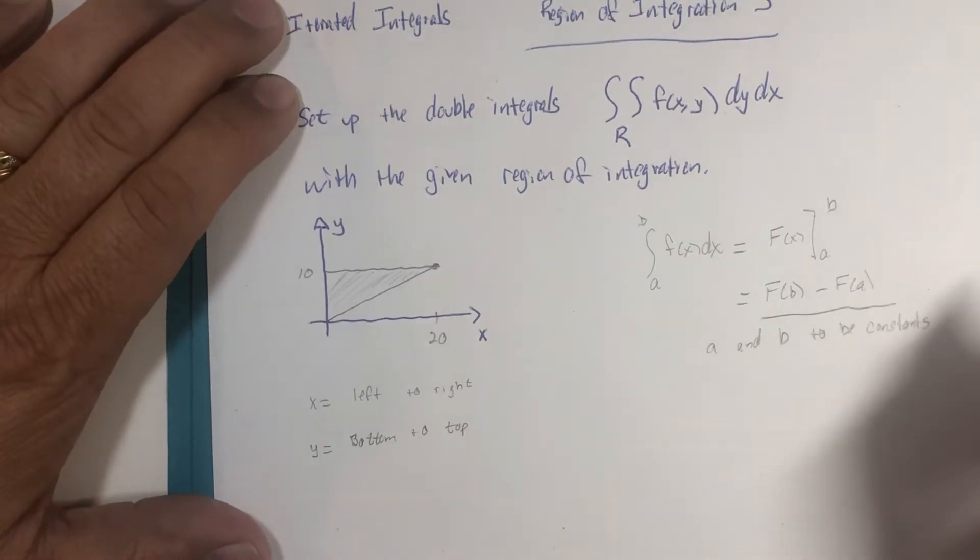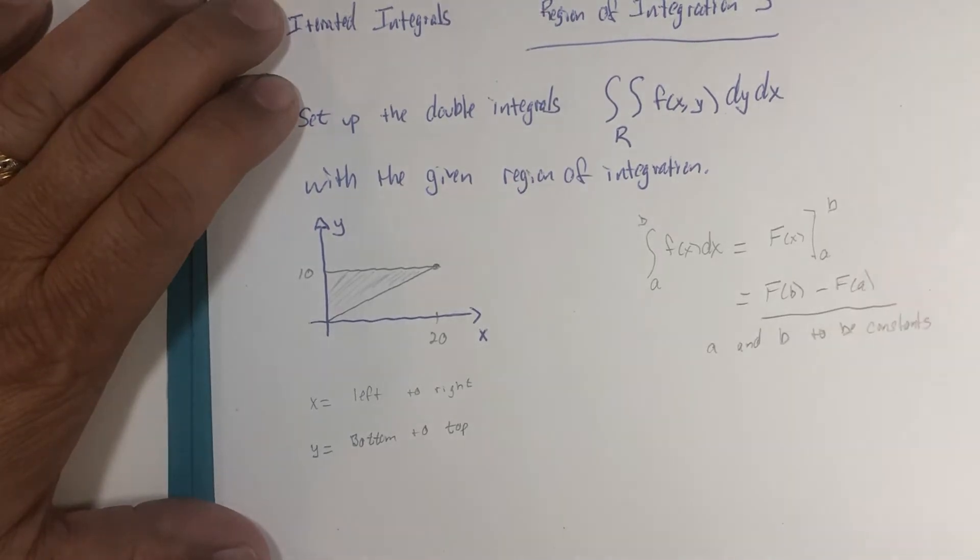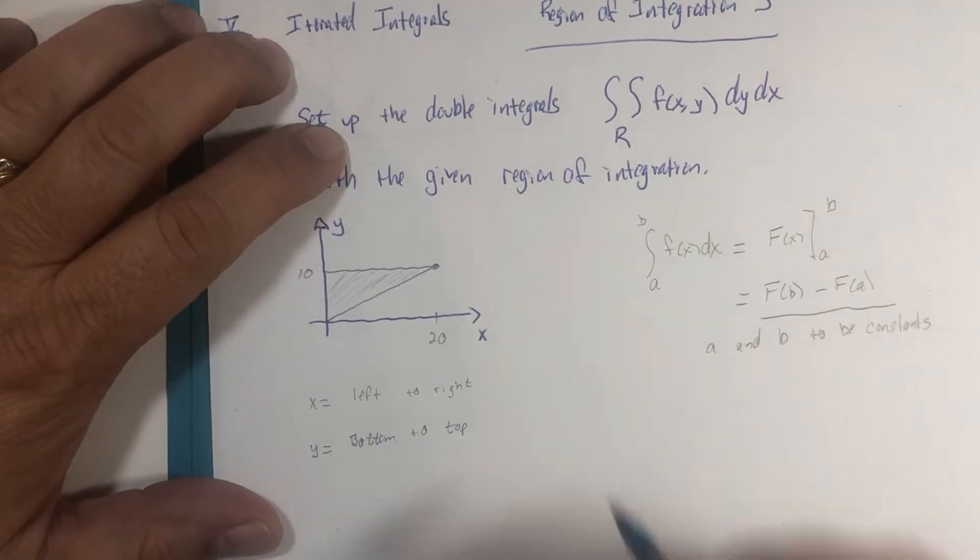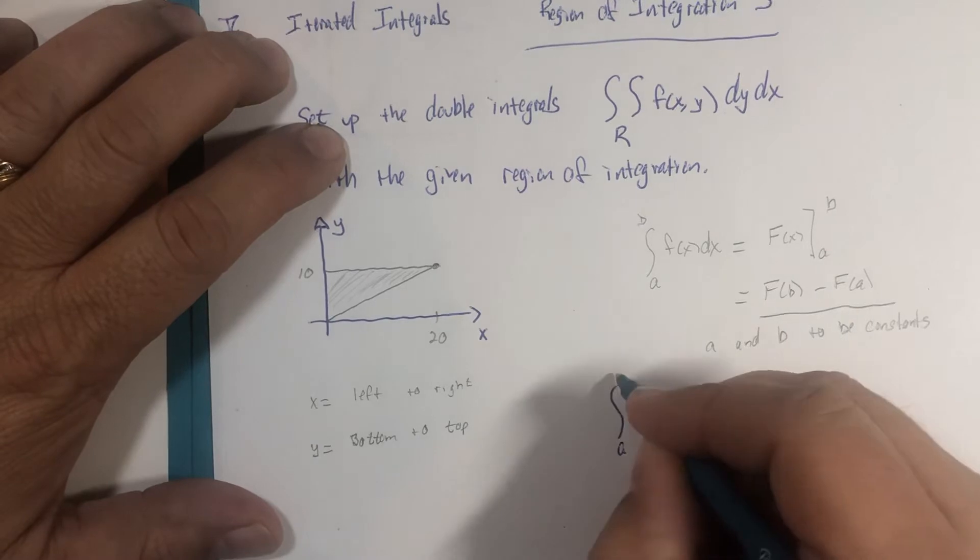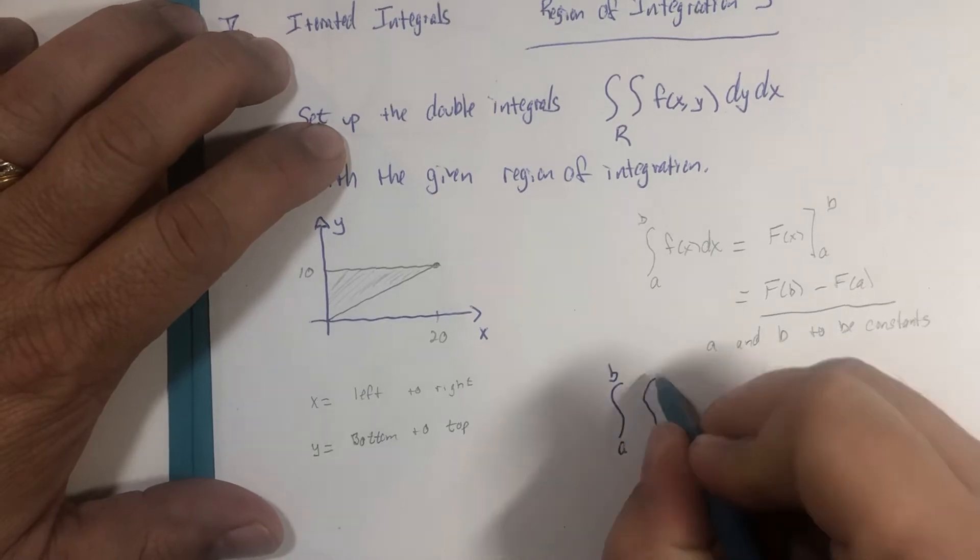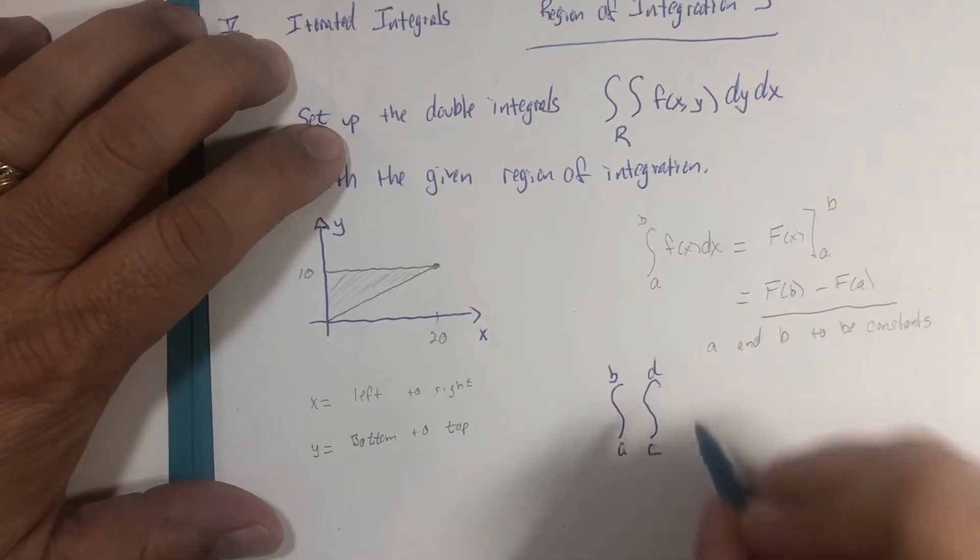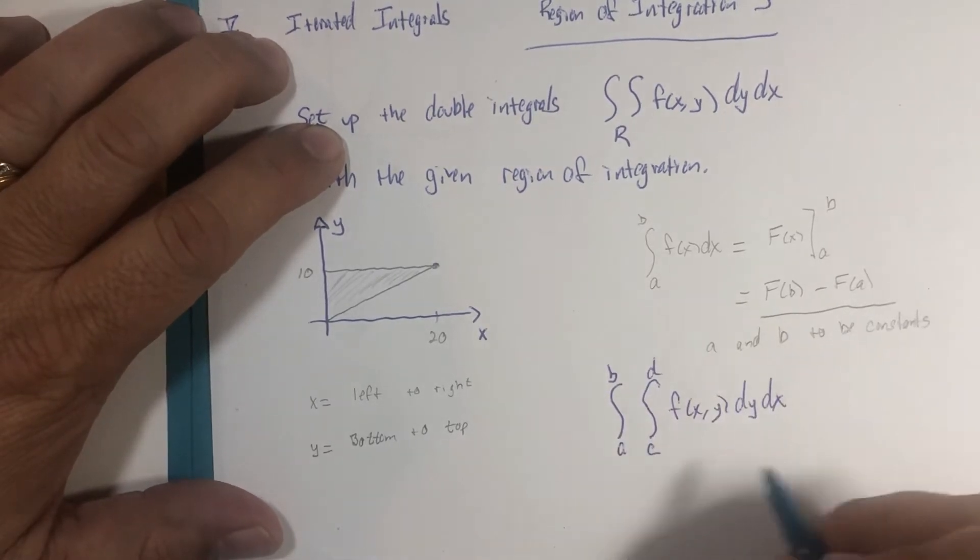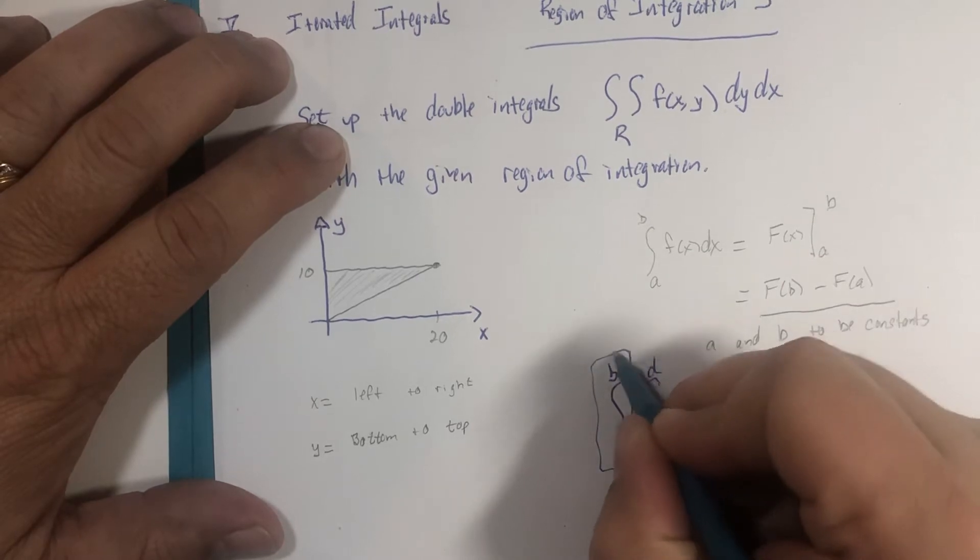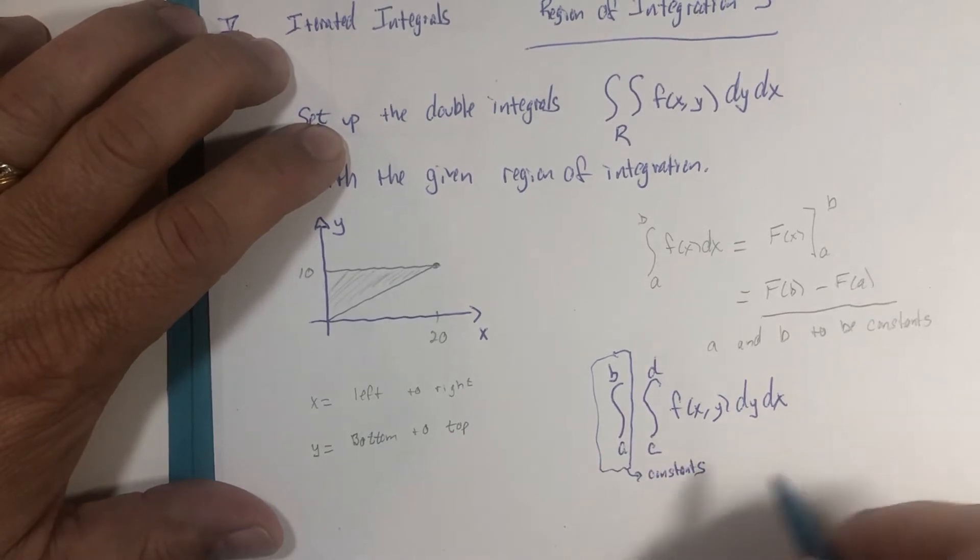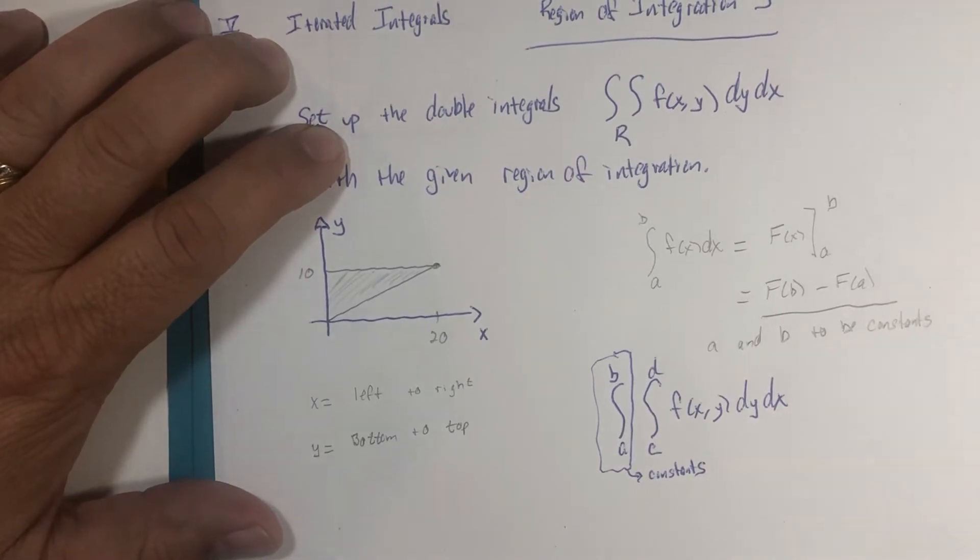We've just started to see that there could be variables on our boundaries. And a better way to write this is that when we set up our double integral, a to b, and then I'll just call it c to d for a moment. We need this last integration to have constants or scalars so that at the end of the problem we can end with a numerical value or a scalar. All right, so here we go.